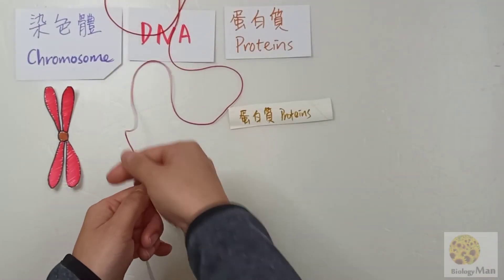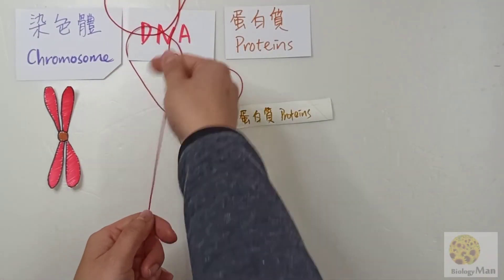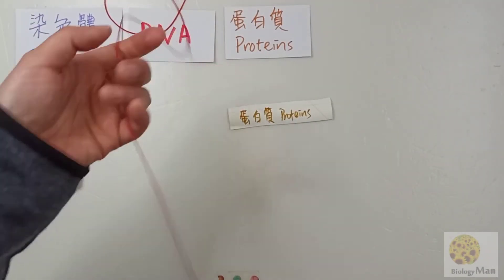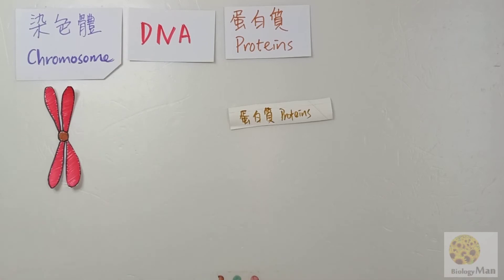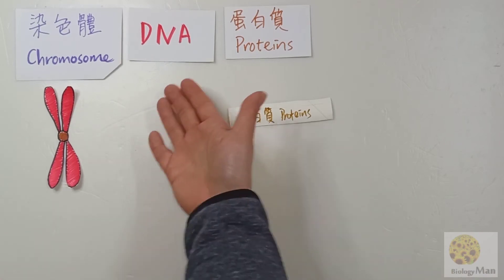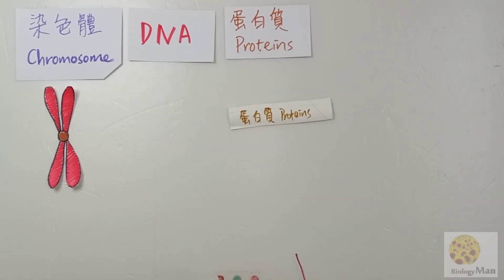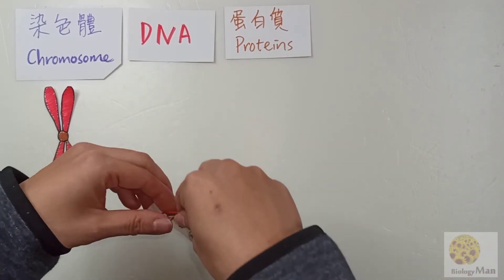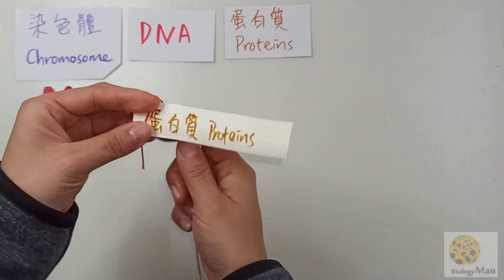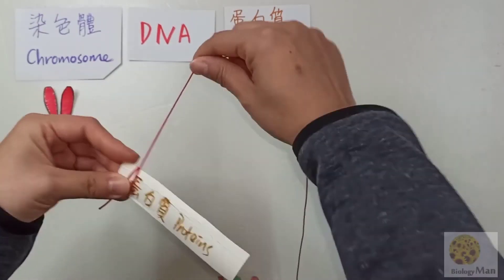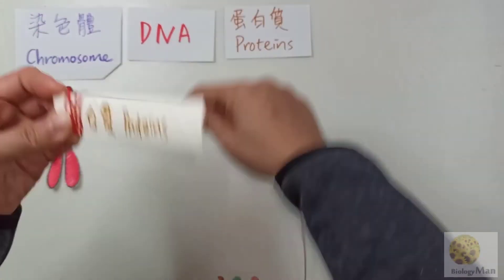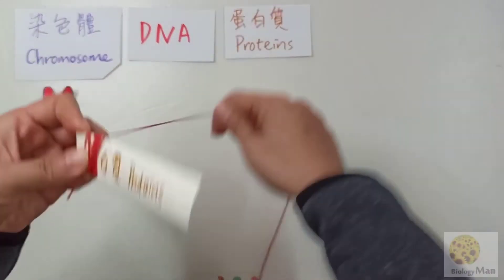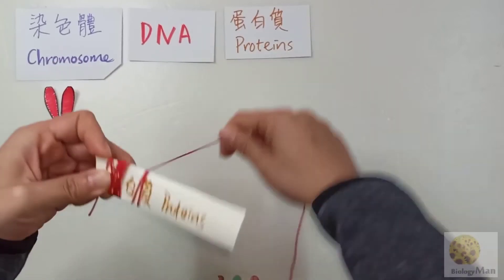So now this is one DNA, and plus some proteins they add together to form the chromosome. This DNA is very, very long. Now I will show you how this long DNA plus the proteins will make up the chromosome — the DNA will just coil around the protein like this.